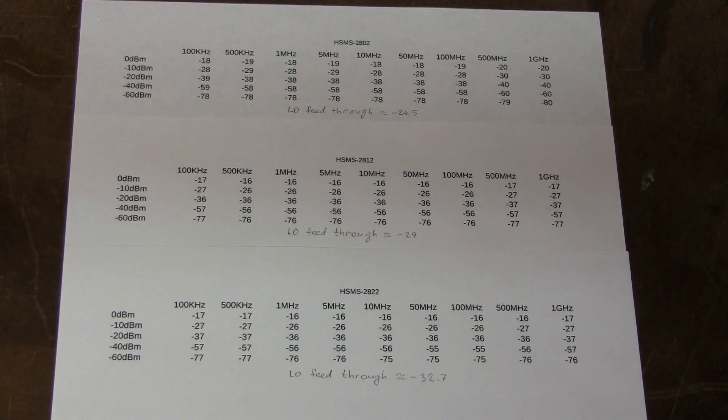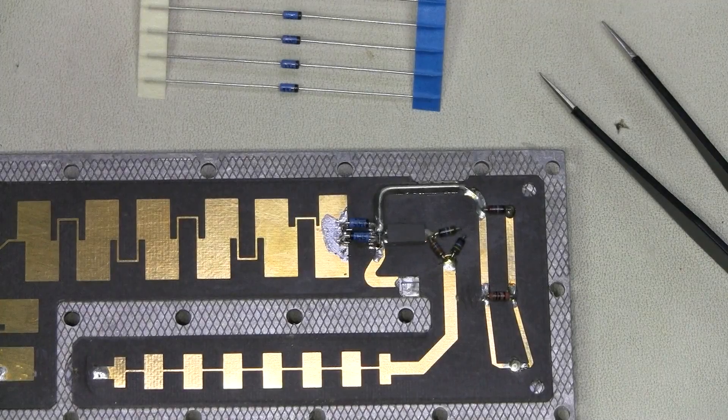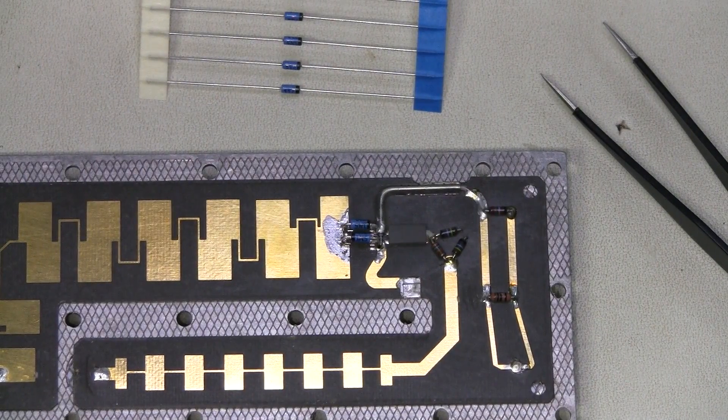I guess it is within the accuracy of this equipment. And there is some random variation as well. But anyway, it looks quite tempting to use these diodes with the lowest LO feed-through and the lowest conversion loss. And now, just for the fun of it, two unmatched 1N5711 diodes.